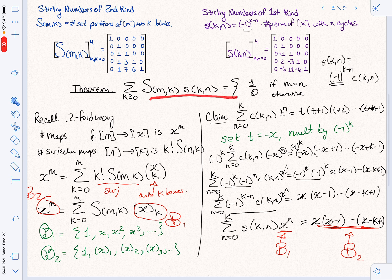So this is what I think is a remarkable fact, and this is the connection between the two kinds of Stirling numbers, and it's the reason that we want the signs to come up in Stirling numbers of the first kind. So here we go.